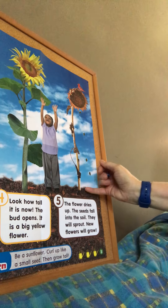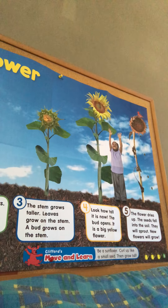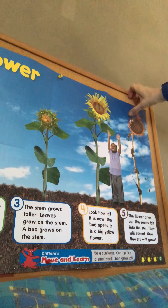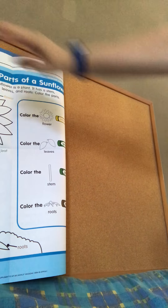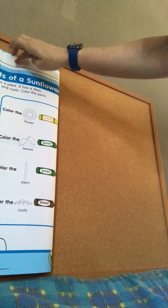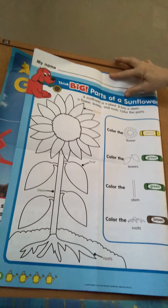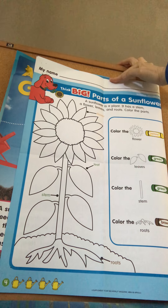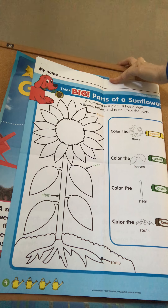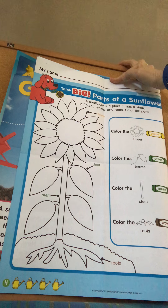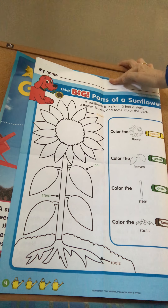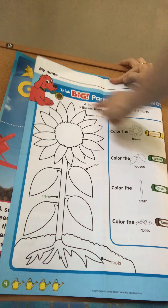Let's see what's on the other side. I know you don't have this at home, but it does say if you, my friends, could draw a sunflower on a piece of paper, you can use any colors you want. This asks the flowers to be yellow.